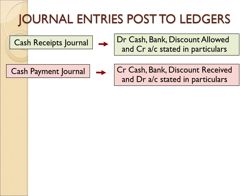The cash payment journal is the opposite of the cash receipts journal. We credit the cash account if the amount is in the cash column, credit the bank account if in the bank column, and also credit discount received. For example, if we paid utilities by check, the particulars column shows 'utilities' and the amount is in the bank column. When posting to ledger, the bank account is on the credit side and the utilities account is on the debit side.